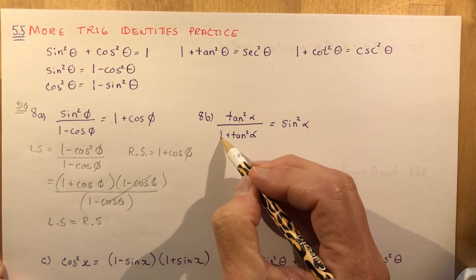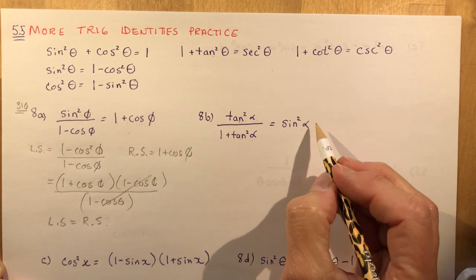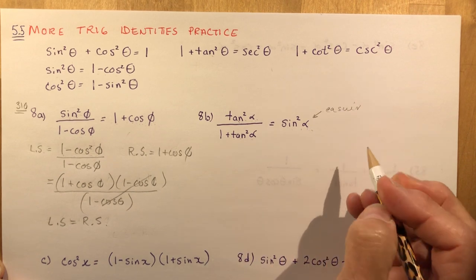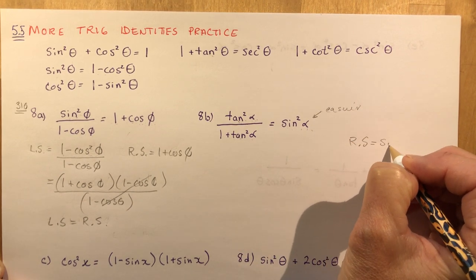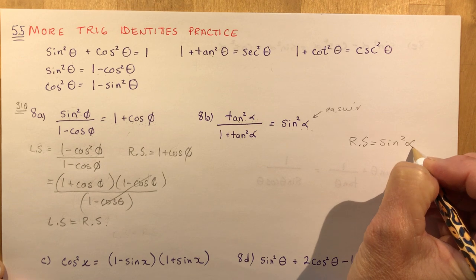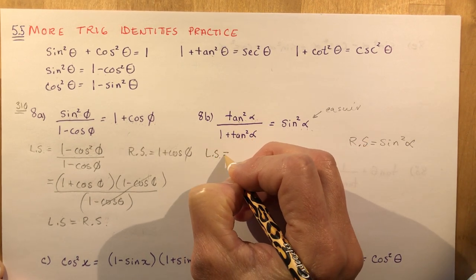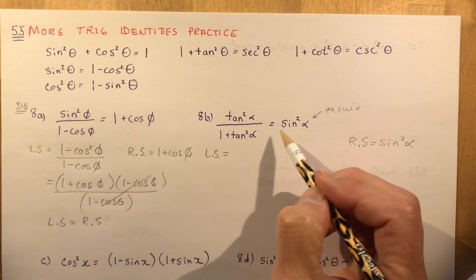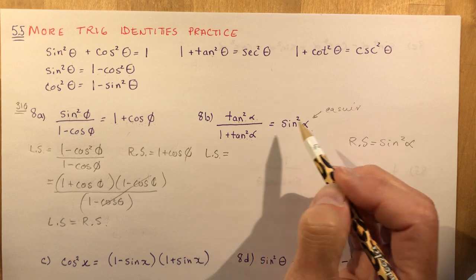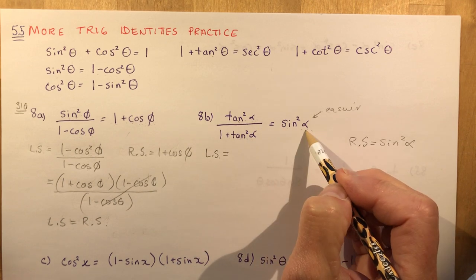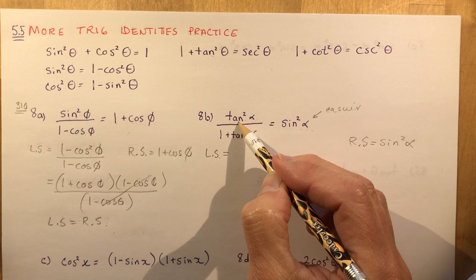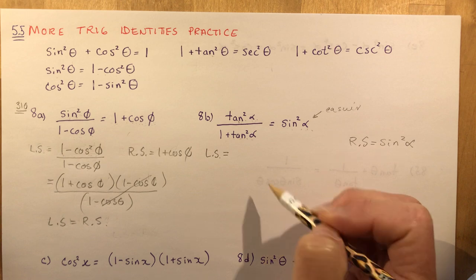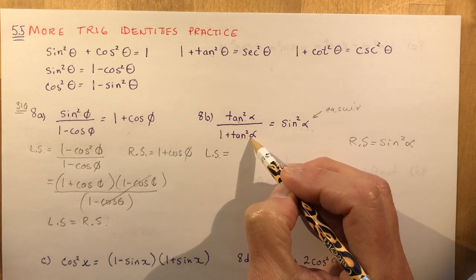On to 8b: tan squared alpha over (1 plus tan squared alpha) equals sine squared alpha. The easier side is sine squared alpha on the right, so we want to work towards that. I'm going to work with the left side. I've got to get rid of the tan somehow — it's going to have to divide out — but remember tan is sine squared alpha over cos squared alpha.